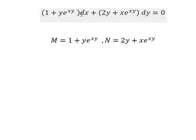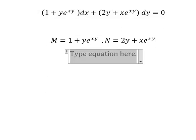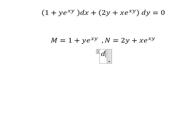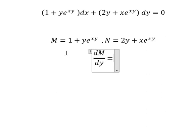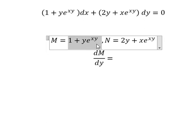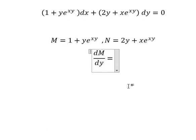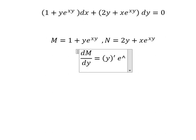We have the exact condition, which means we need to do the first derivative of M with respect to y. The constant term gives zero. For the remaining term, we apply the product rule, so we have like this.